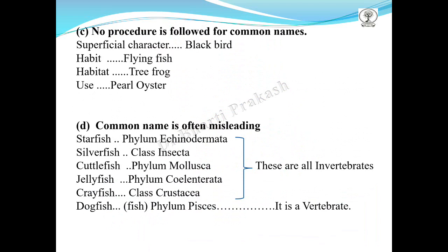Similarly, a habitat where a particular animal lives gives its common name — tree frog, for instance, if the frog lives in trees. Likewise, the usefulness of a particular animal determines its name: in an oyster where a pearl is formed, we call it a pearl oyster. Common names are often very misleading.